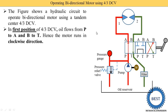During the first position, port P is connected with port A, and port B is connected with port T — oil flows P to A and B to T, hence the motor runs in a clockwise direction. Pressurized oil from the pump enters port P, passes P to A, and enters the left side of the motor. We draw this in red color for high pressure. The oil strikes the vanes of the motor and the motor rotates clockwise. Oil exits from the second side, comes into port B, flows B to T, and goes to the oil reservoir through the filter. This is the first position.